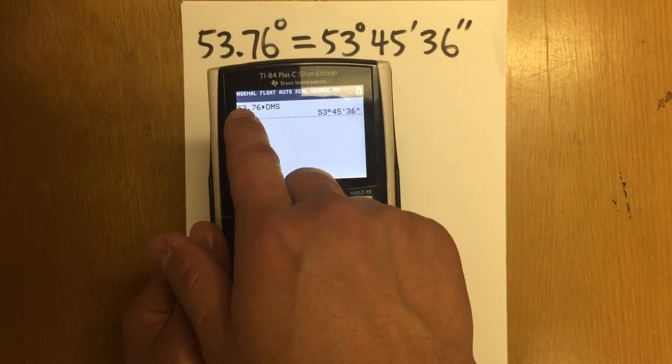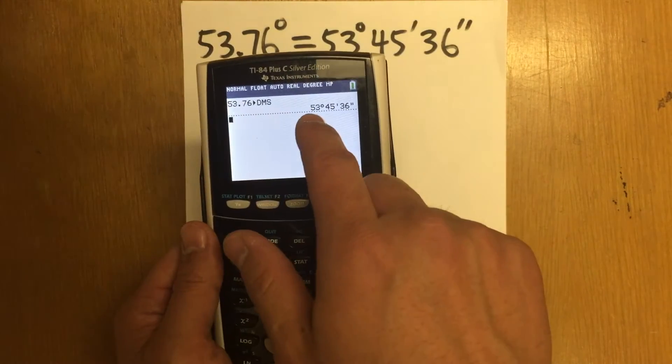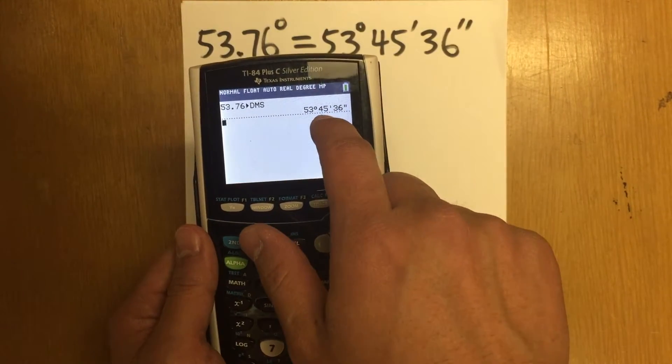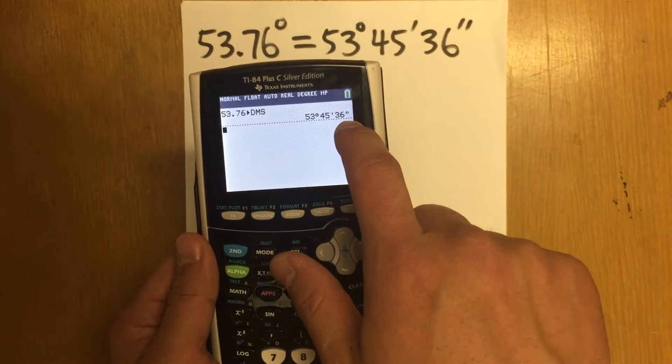As we can see, 53.76 degrees is 53 degrees, 45 minutes and 36 seconds. Just like this.